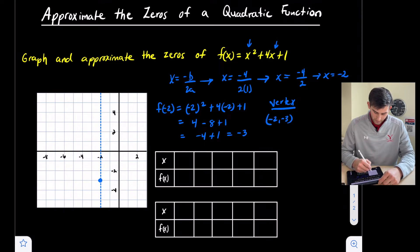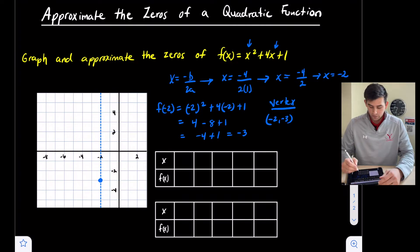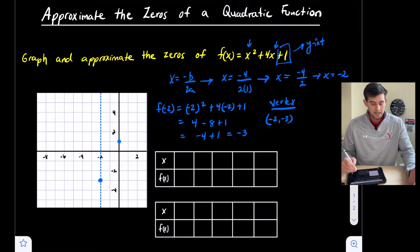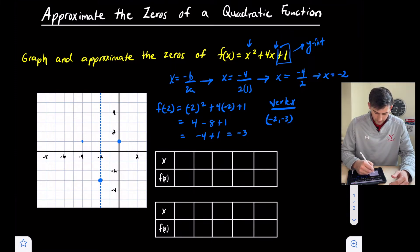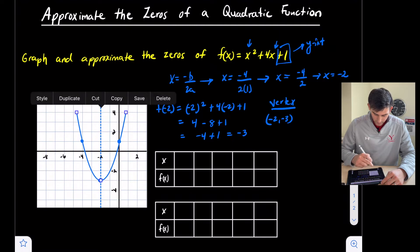Let's plot negative 2, negative 3 right here. Remember, in standard form the c value is our y-intercept, so we plot the y-intercept at 1. Then we reflect that point over the axis of symmetry — it was 2 units to the right, so 2 units to the left. Now we can draw a parabola through those 3 points.